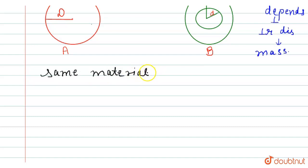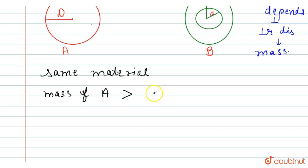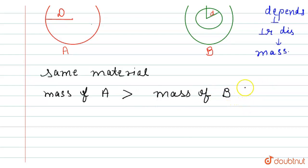Clearly, the mass of cylinder A is greater than the mass of cylinder B, as cylinder B is hollow.